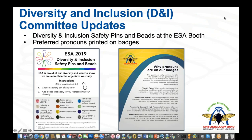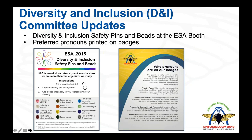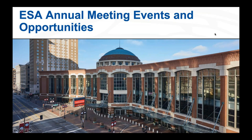For diversity and inclusion updates, we are doing safety pins and beads at the ESA booths so that you can proudly express your diversity to the greater community by selecting a color safety pin and a bead that represents your diversity. We also have pronouns that will be displayed on badges to allow individuals to identify the gender they associate with. With that, I'd like to hand it off to Sandra to talk about our ESA annual events.